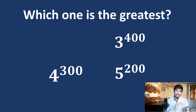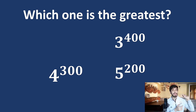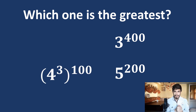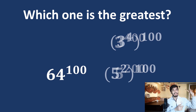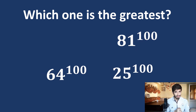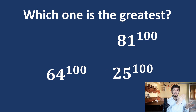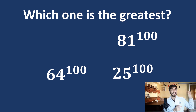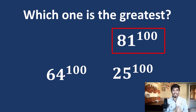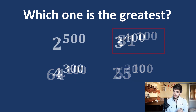We now have three options remaining. We can't make the bases equal, so we make the powers equal instead. We rewrite 4 raised to the power 300 so that 4 cubed equals 64. Similarly we convert the other two options. Now we have different bases with the same power, so using Rule 2, the greatest base is 81.